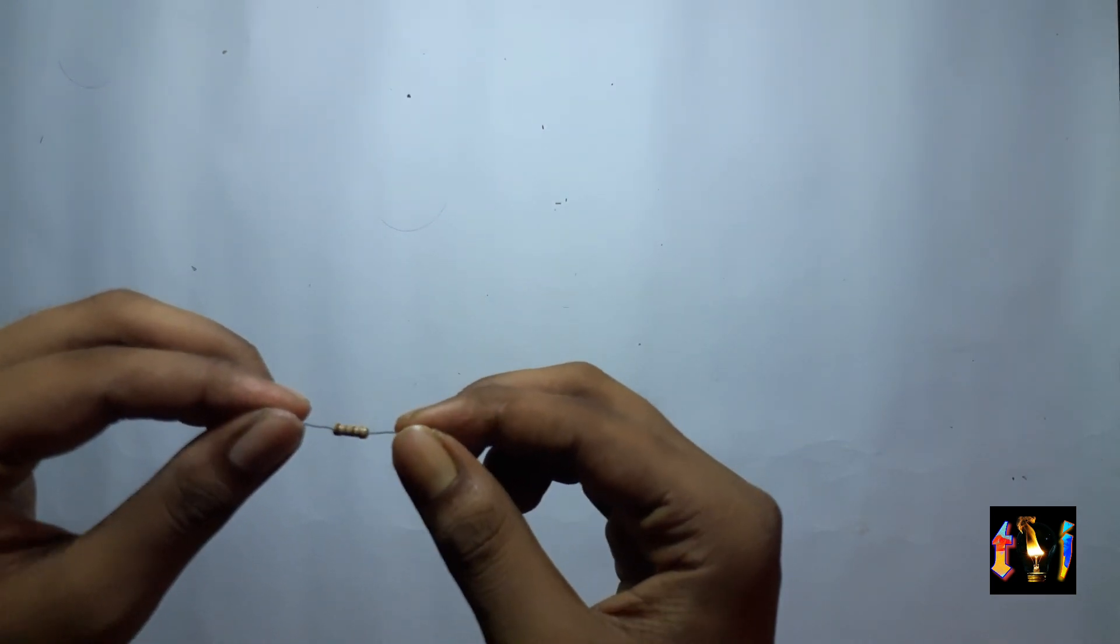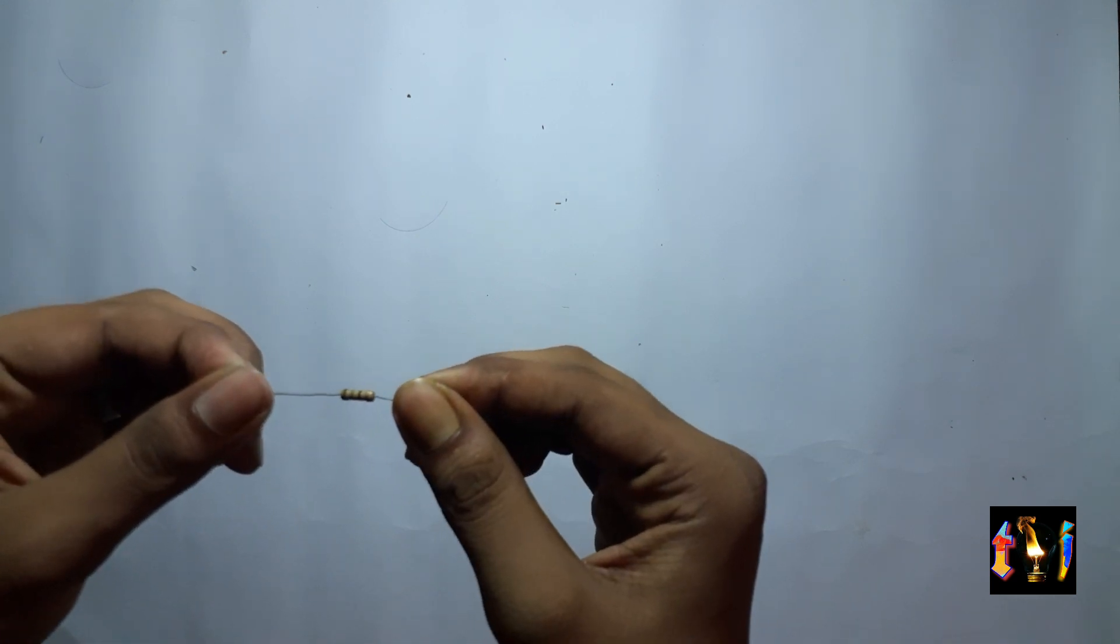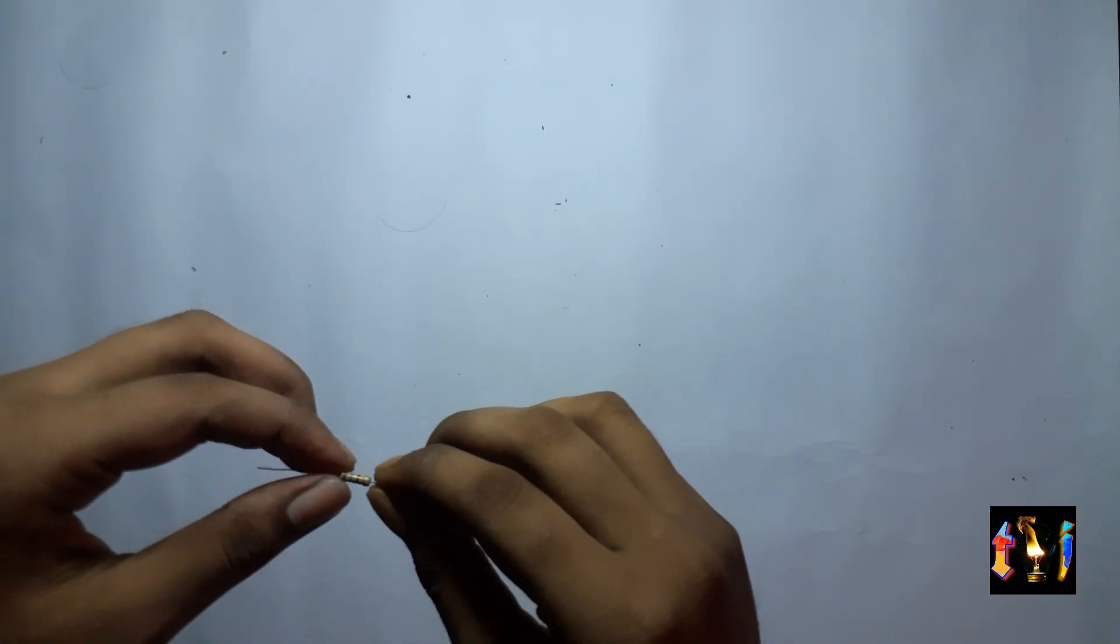This color coding tells us about the resistance of the resistor. We will be talking about that later in the video.